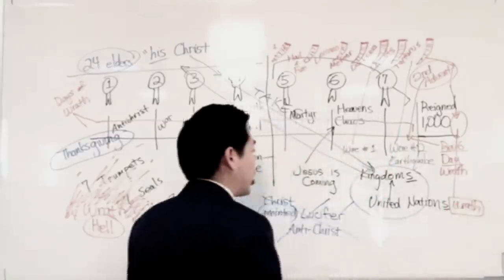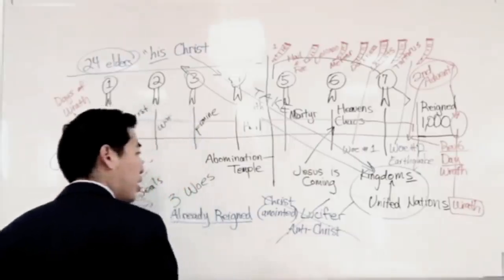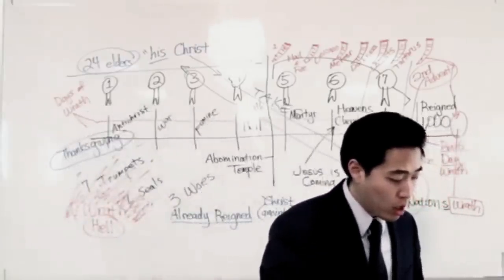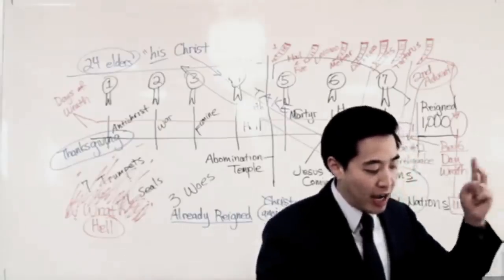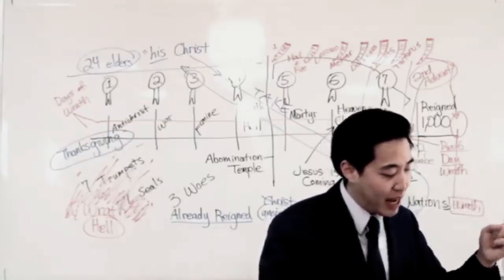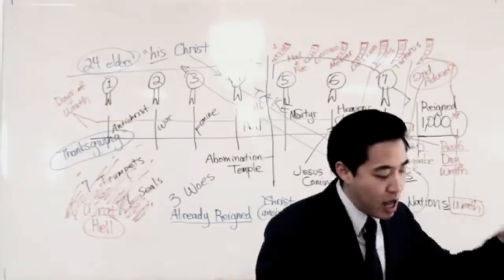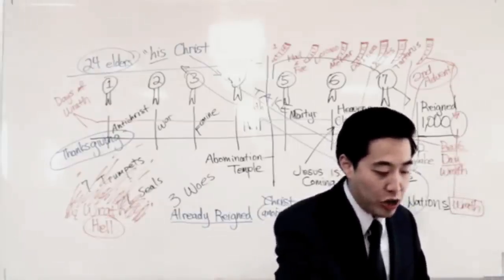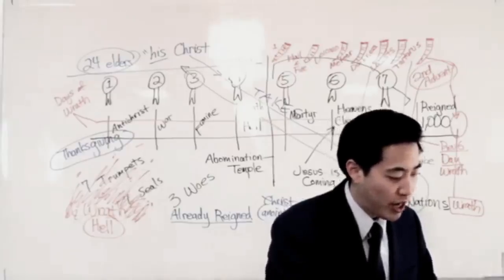Now notice the order again as you compare with Revelation 20 and Revelation 11. Verse 18: nations were angry, thy wrath has come. That makes sense. And the time of the dead that they should be judged. Compare that with Revelation 20. Is that accurate?